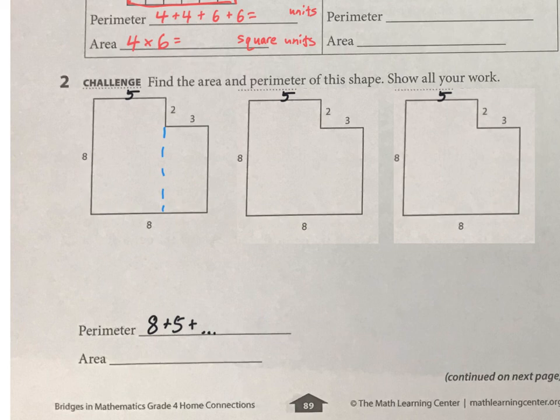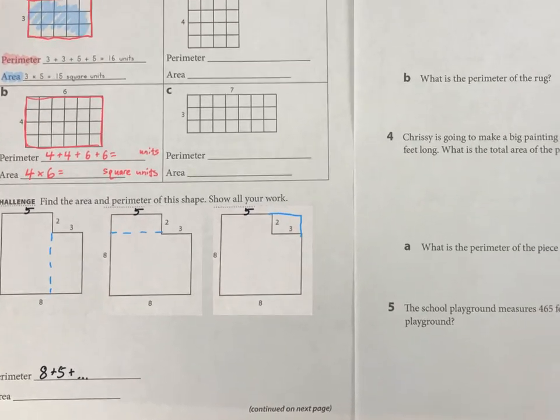Or you could cut it like this, and then figure out one rectangle and the other rectangle and add them together. Or another interesting thing you could do is figure out the area of this whole thing here, and then subtract the area of this little piece here. And those are three different ways you can figure out the area of those shapes.